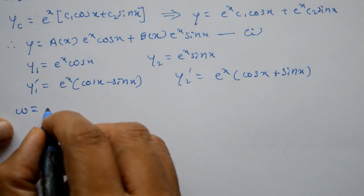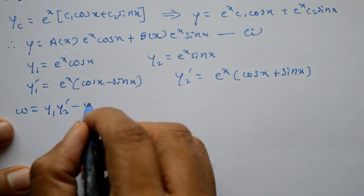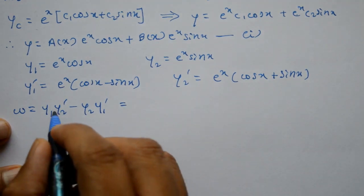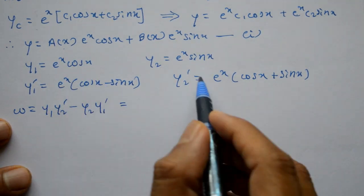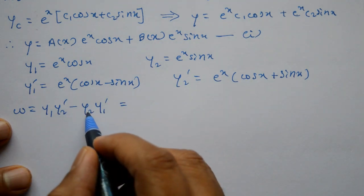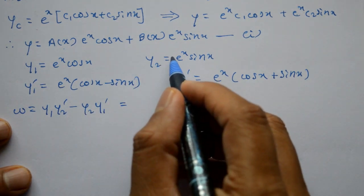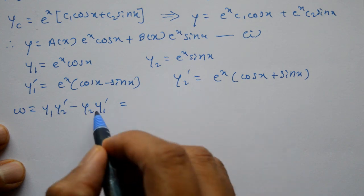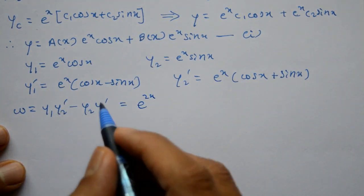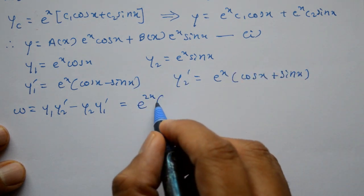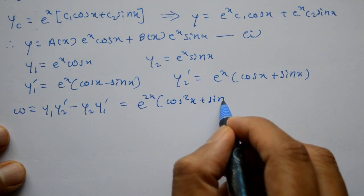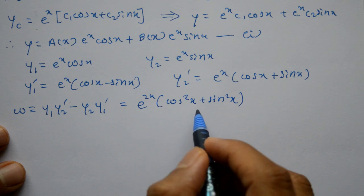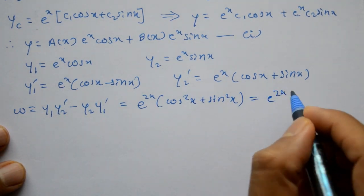The Wronskian W equals y1·y2' minus y2·y1'. Substituting: e^(2x) is common. Inside we have cos x(cos x plus sin x) minus sin x(cos x minus sin x), which gives cos²x plus sin²x, and since cos²x plus sin²x equals 1, we get W equals e^(2x).